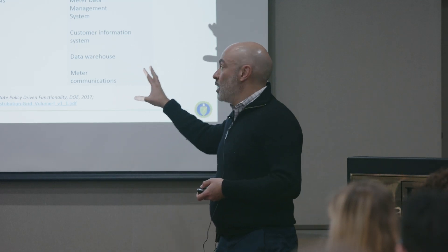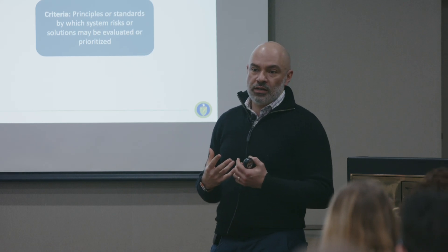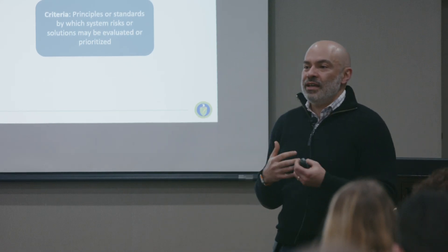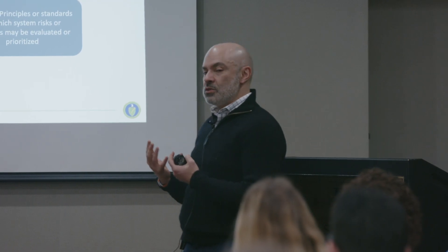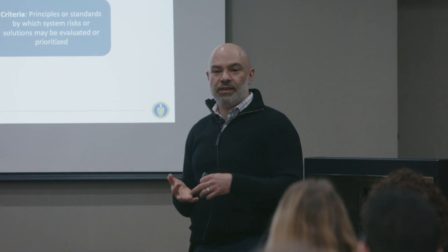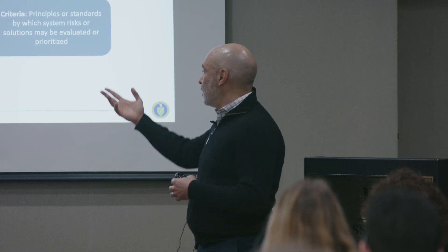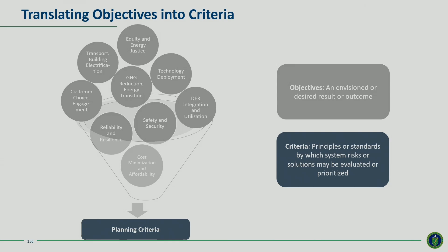The reason this is so important is that the number and scope of objectives is expanding. Typically in distribution system planning we think about reliability, safety, security, affordability. Now we're also looking at customer choice and engagement, DR integration for grid services, transportation, building electrification, GHG reduction, and energy transition. There are a number of different objectives — from state mandates or other sources — that inform what we need to do and the outcomes we want from planning.